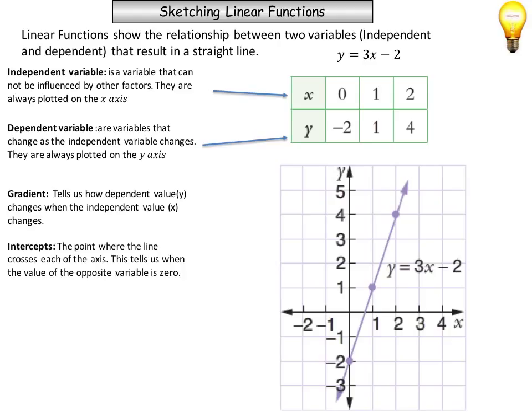The intercepts, which are another important part of the linear function, are where the line actually crosses either the x-axis or the y-axis. They're important because they tell us when the value of the opposite variable is zero.